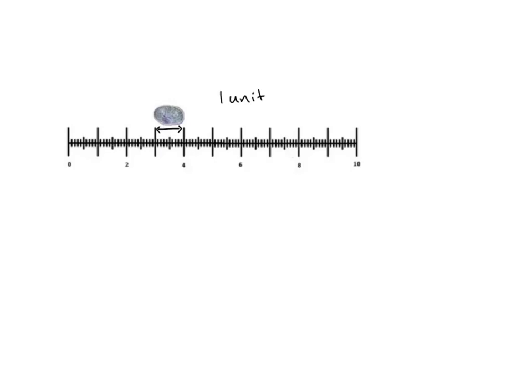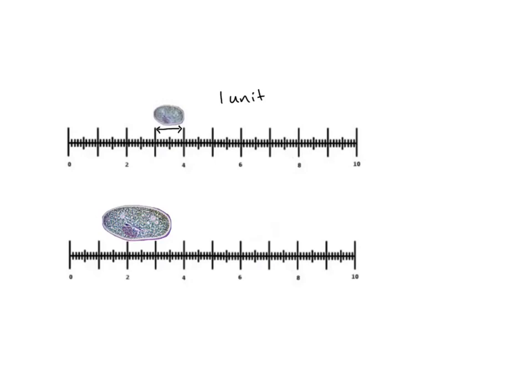If we decide we want to look at this object under a higher magnification and move the objective lens around, we see that it looks like this. The object looks bigger because it's been magnified, but the eyepiece graticule scale is the same. That's because the eyepiece graticule is in the eyepiece itself, whereas the objective lenses are beneath it — so when you increase the magnification by changing the objective lens, the eyepiece graticule doesn't get magnified, but anything on the stage does.